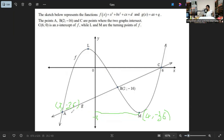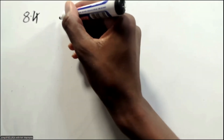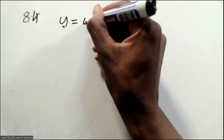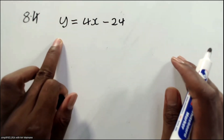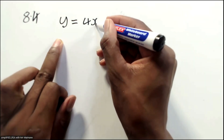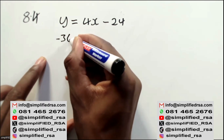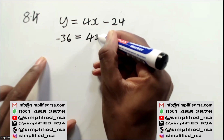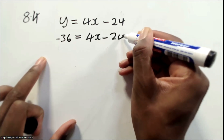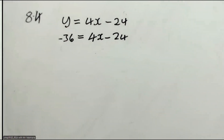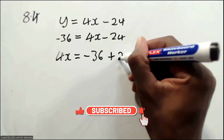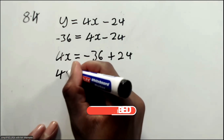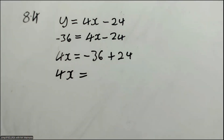To find x when y = -36: substituting into g(x) = 4x - 24 gives -36 = 4x - 24, so 4x = -36 + 24 = -12, therefore x = -3. So point A is at (-3, -36). The length of AM is the horizontal distance from x = -3 to x = 4, which is 4 - (-3) = 7 units.